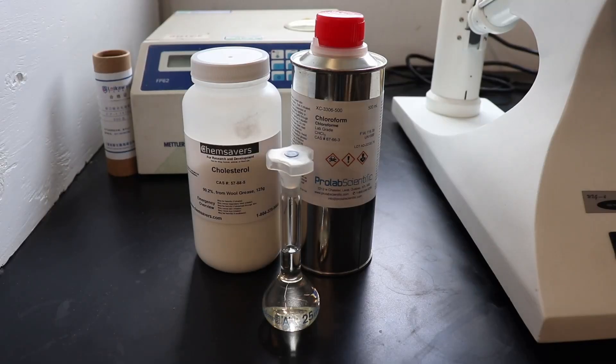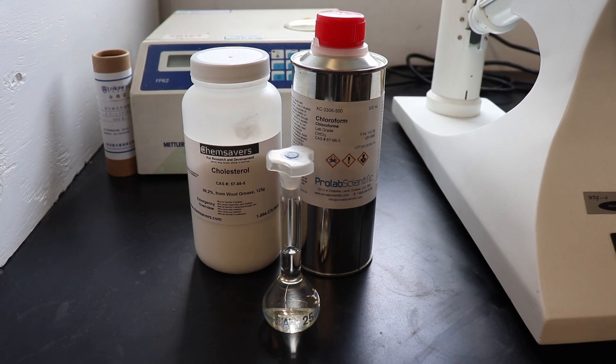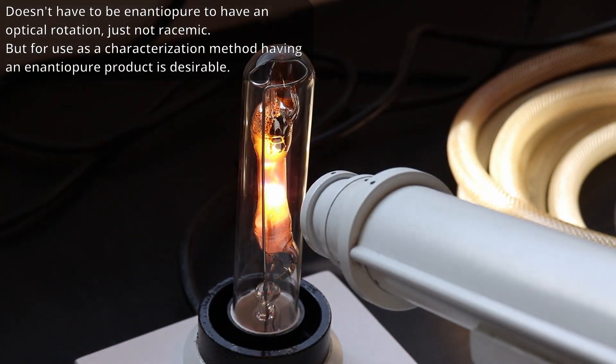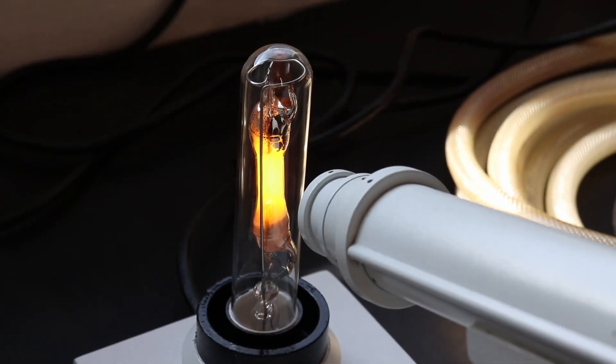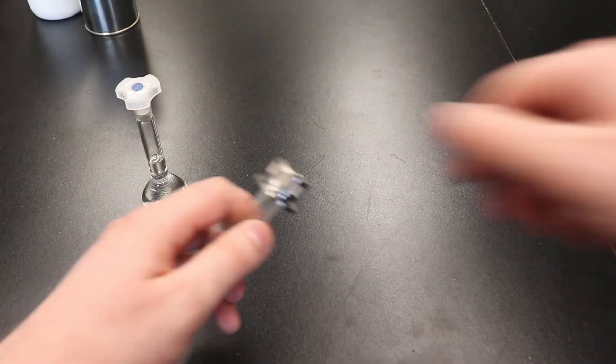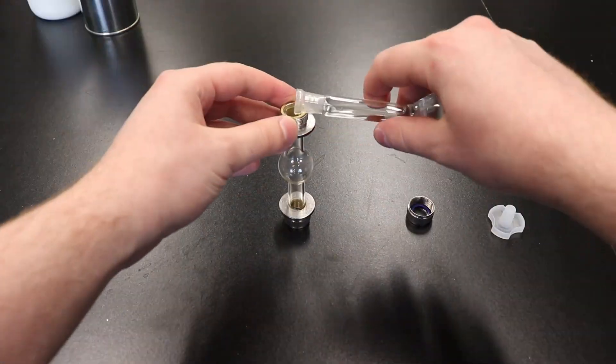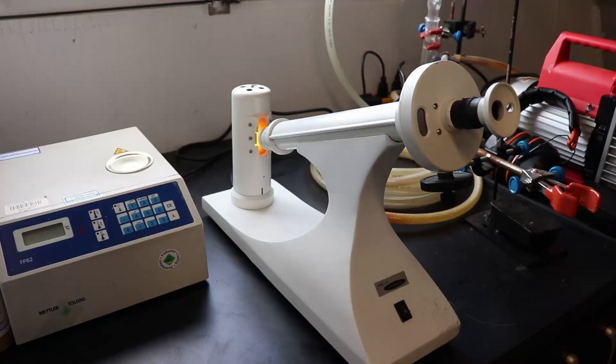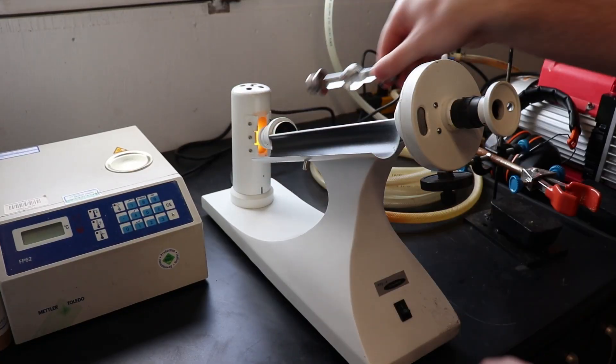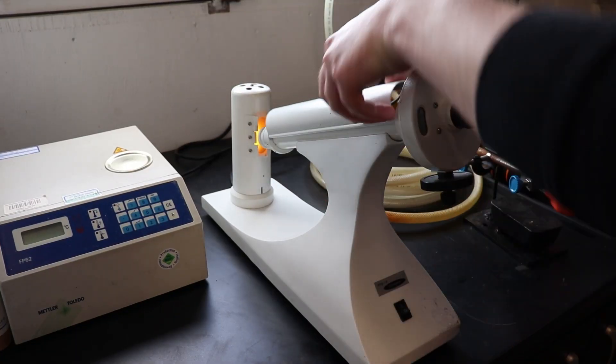Since both cholesterol and cholesterol acetate contain chiral centers and are enantiopure, they possess the property of optical rotation, and thus we can use polarimetry as an additional characterization technique. First I prepared a reference solution of cholesterol dissolved in chloroform at a concentration of 8 grams per 100 milliliters. The solution was transferred into the polarimeter cell and then loaded into the polarimeter.